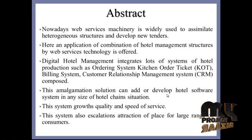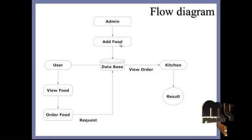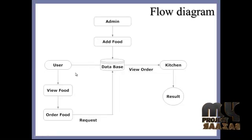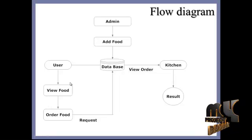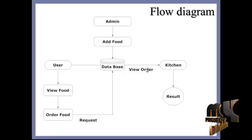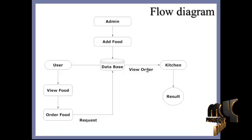Let's see the flow diagram of this project. The first module is the admin module. Next is add food — the food added by the admin is stored in the database. Next is the user order module, where the user views the food and places a food order request. After ordering, the view order module is used to view the order and the customer's booking. This view order is then sent to the kitchen.